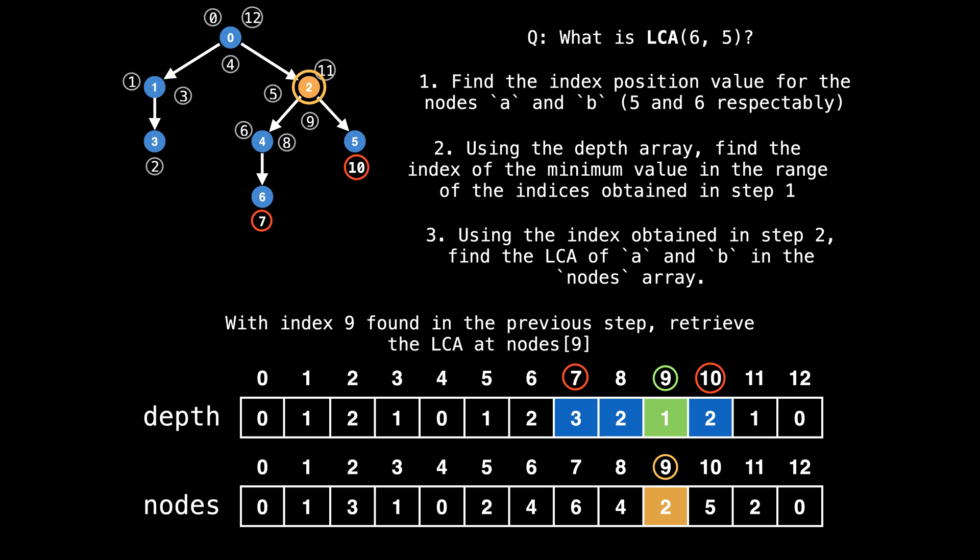Alright, so to recap what we just did. First, we found the index position of the two nodes five and six in the Eulerian tour, which gave us the range seven to 10. Then in the depth array, we query the index of the minimum element in the range seven to 10. Finding the index of the minimum element between the two indices seven to 10 finds the node with the smallest depth along the path of nodes between the two indices in the Eulerian tour, which you will remark is always the lowest common ancestor. Then with the index obtained in step two, we can retrieve the LCA from the nodes array.